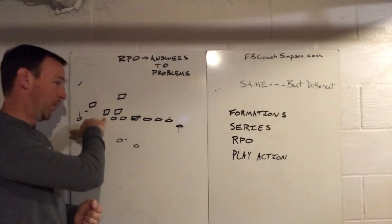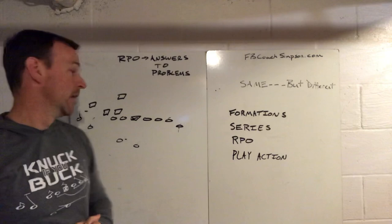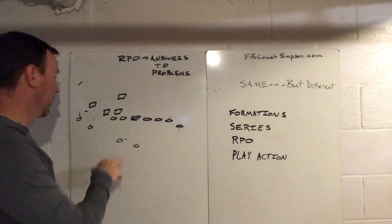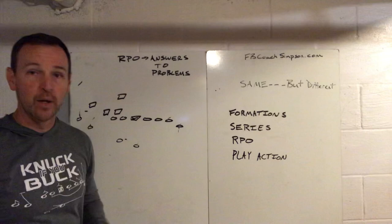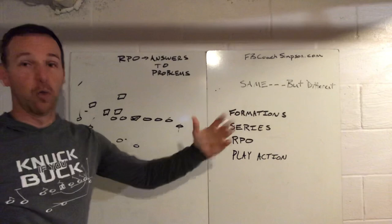The oldest RPO in the book is the zone read. Rich Rod made it famous back at West Virginia with all his zone stuff. Now we're gonna pair that with our runs. We're basically going to read this five-technique — we're gonna tell our tackle with a keyword to not block that guy, go block inside gap to linebacker, and the quarterback is going to be responsible for this guy.